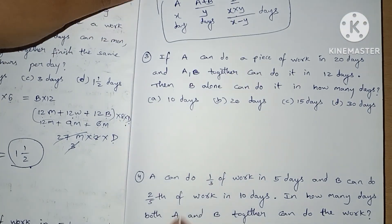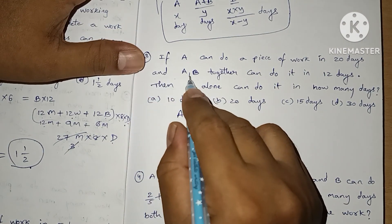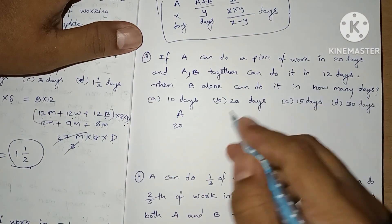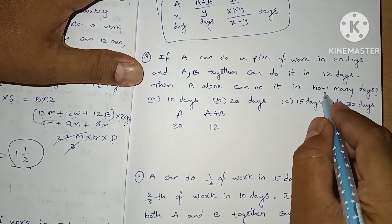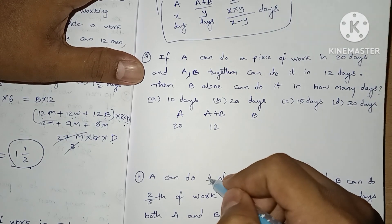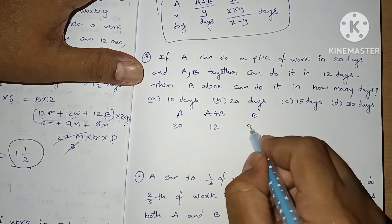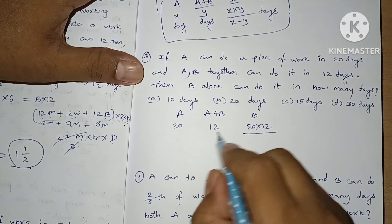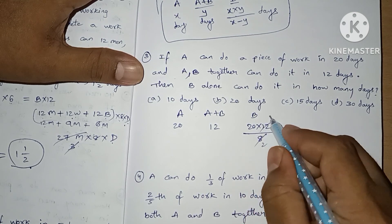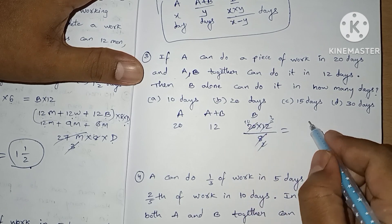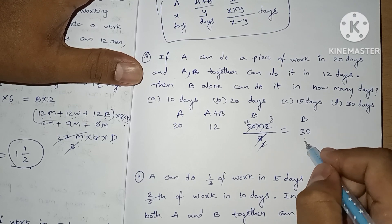Let's see the question. If A can do a piece of work in 20 days and A and B together can do it in 12 days, then B alone can do it in how many days? We need to find B. The formula gives us 20 × 12 divided by the difference, which is 8. Simplifying: the answer is 30. B can complete the whole work alone in 30 days.